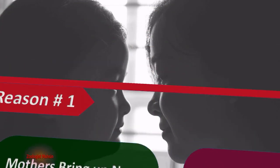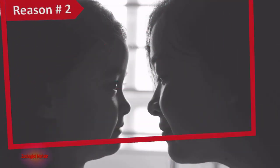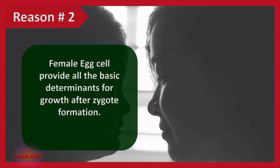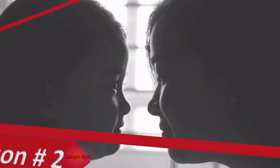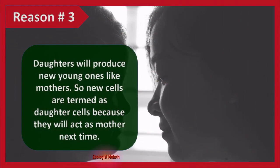Reason two: female egg cells provide all the basic determinants for growth after zygote formation. Fathers only provide DNA for fertilization to complete the homologous pairs; the rest of the ingredients are used from the mother's egg cell.